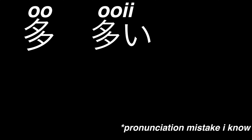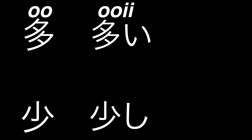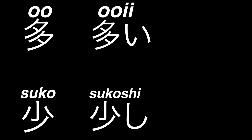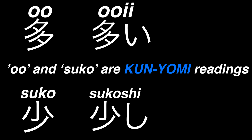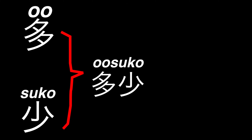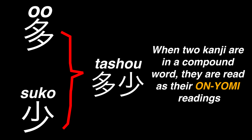This character in this word would be read as o, as in ooki, and this character in this word would be read as suko, as in sukoshi. They're read as their kunyomi readings, as they have kana sticking out of them. But when you put these two characters together, it isn't pronounced oosuko — rather tasho — because now that two kanji are next to each other, they'll be read with their onyomi readings.